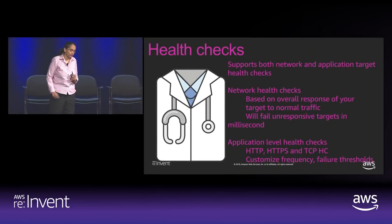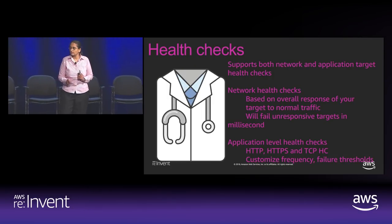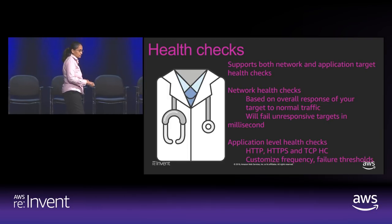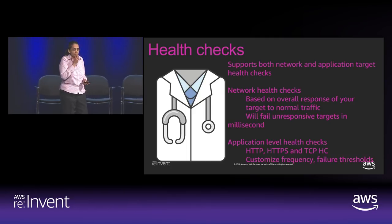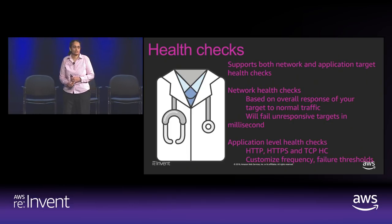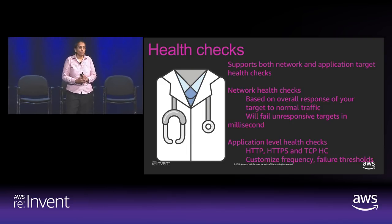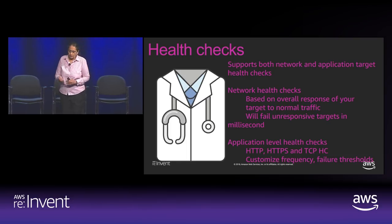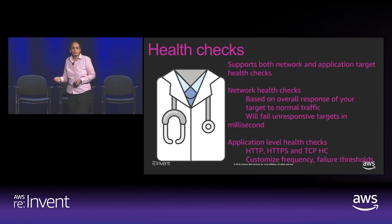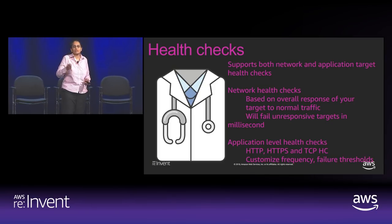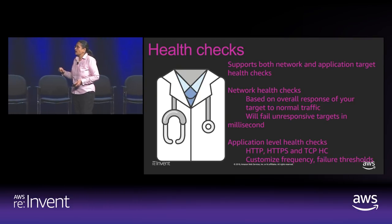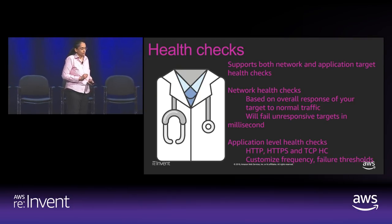For availability on the Network Load Balancer: just like the Application Load Balancer, it supports health checks, but with one additional feature — network health checks in addition to application health checks. Application health checks work the same — configurable HTTP or TCP checks with customizable frequency and failure thresholds. Network health checks monitor the behavior of your backends, and if any behavior changes are detected, it fails away within seconds. Use this for fast failover use cases.